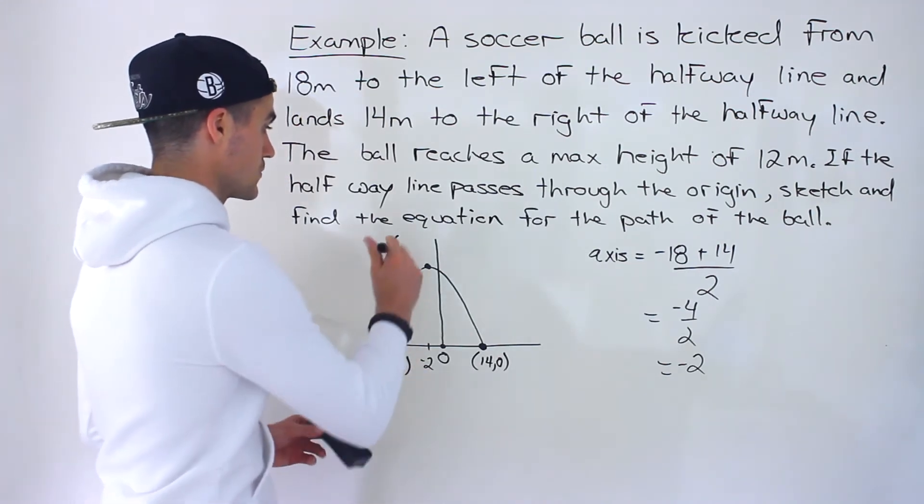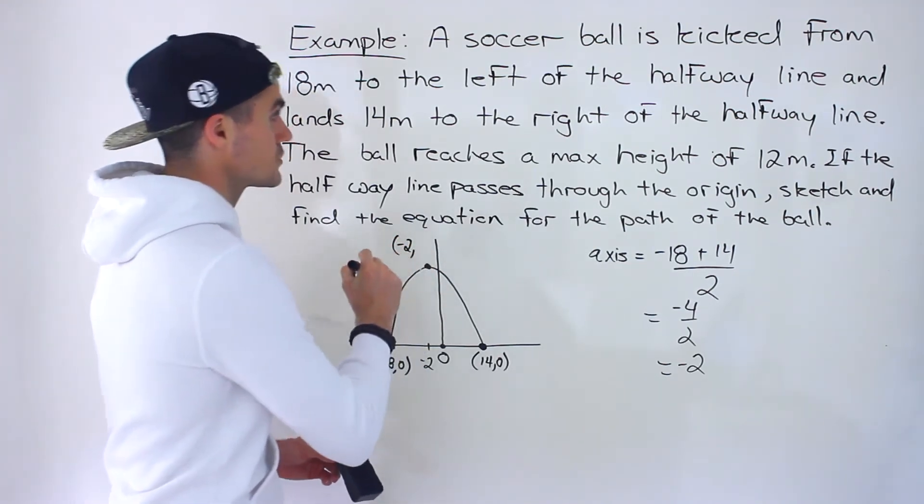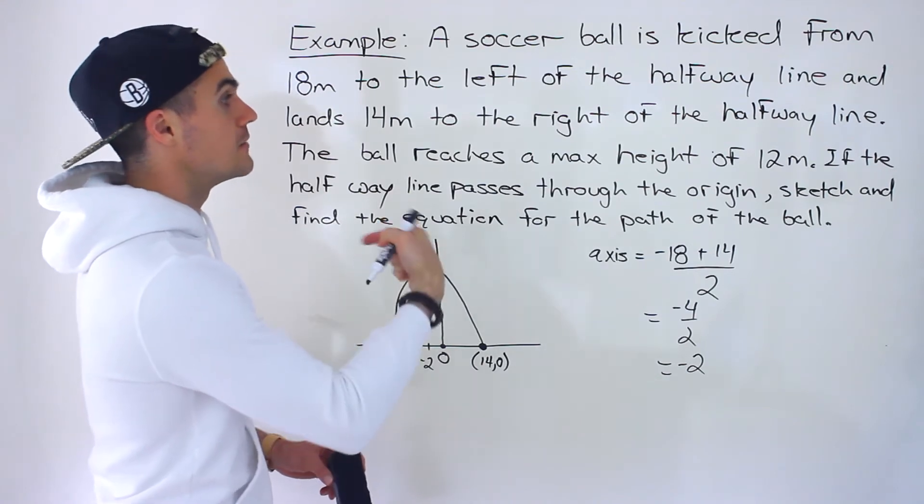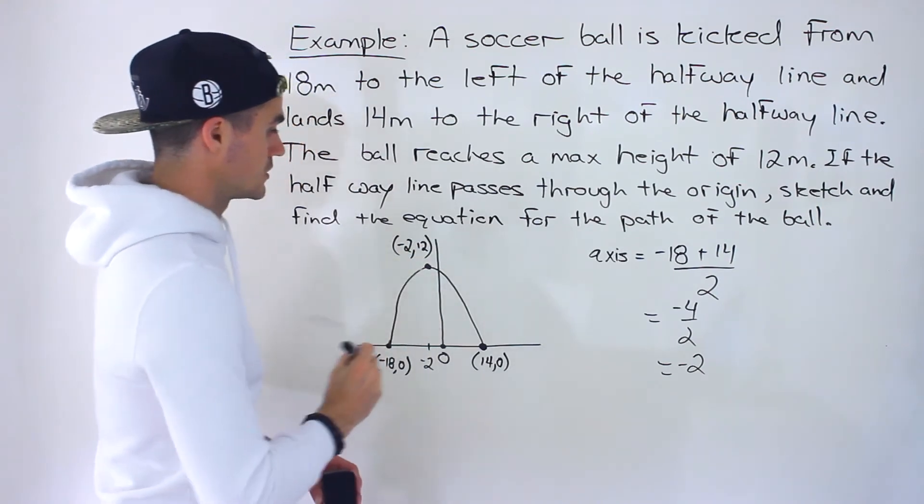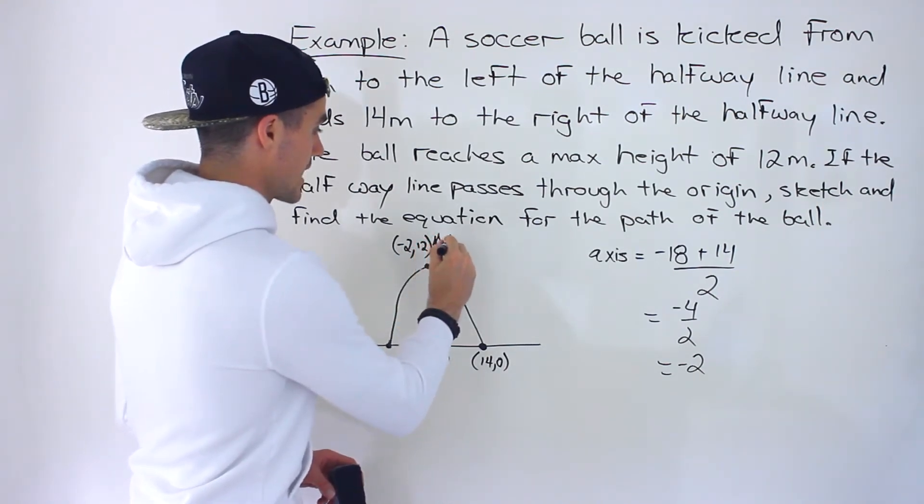So we know from that calculation that the ball is reaching a maximum height from a horizontal distance of two meters to the left of the halfway line. It's still in this negative portion. So we know the x value is going to be negative two, and we're told that the maximum height of the ball is 12. So we know this is going to be 12 because this axis is the height.